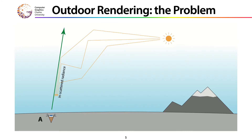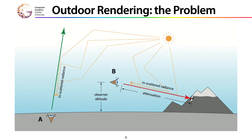The standard, easiest way to think about what constitutes a pixel on the sky is to think about it like case A: a ray that goes to infinity, where the radiance you see is the radiance that gets in-scattered from particles in the atmosphere. But of course, in order to do compelling outdoor renderings, you need to solve all the components of the rendering problem, including in-scattered radiance from finite distances, attenuation, and so on.